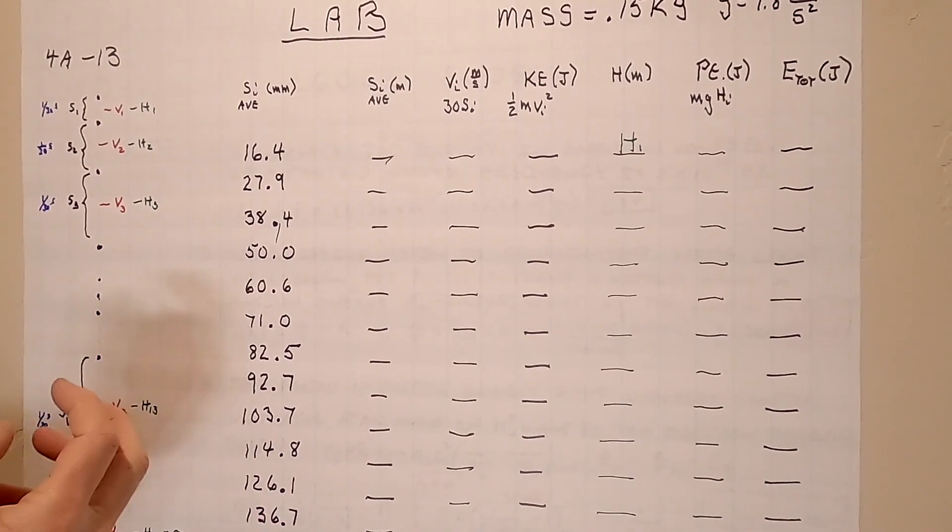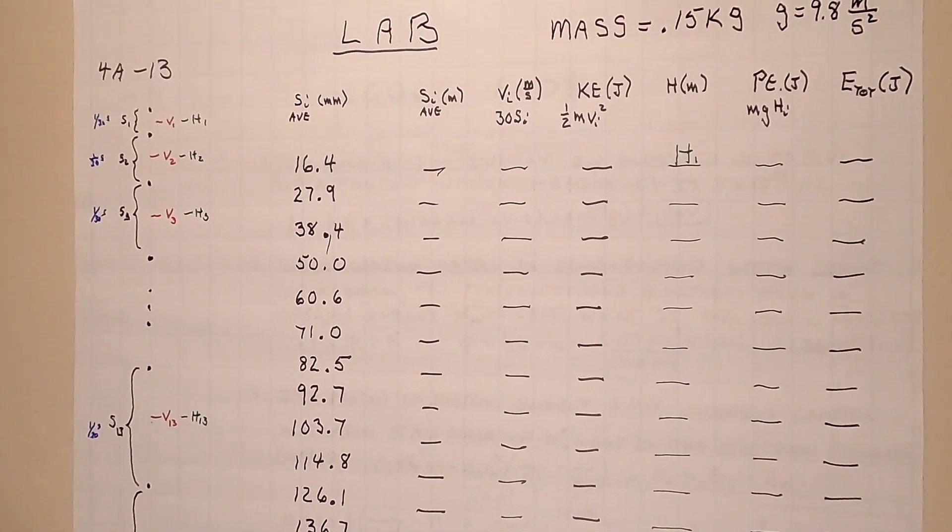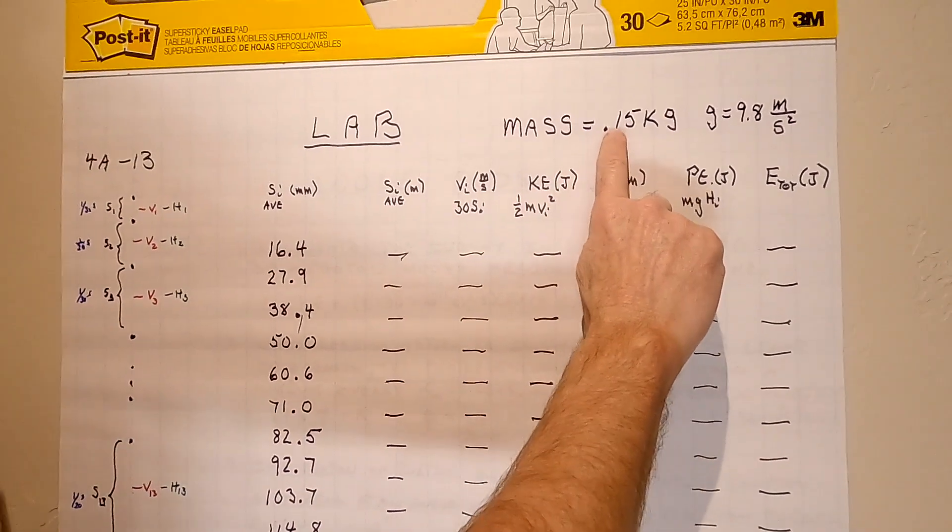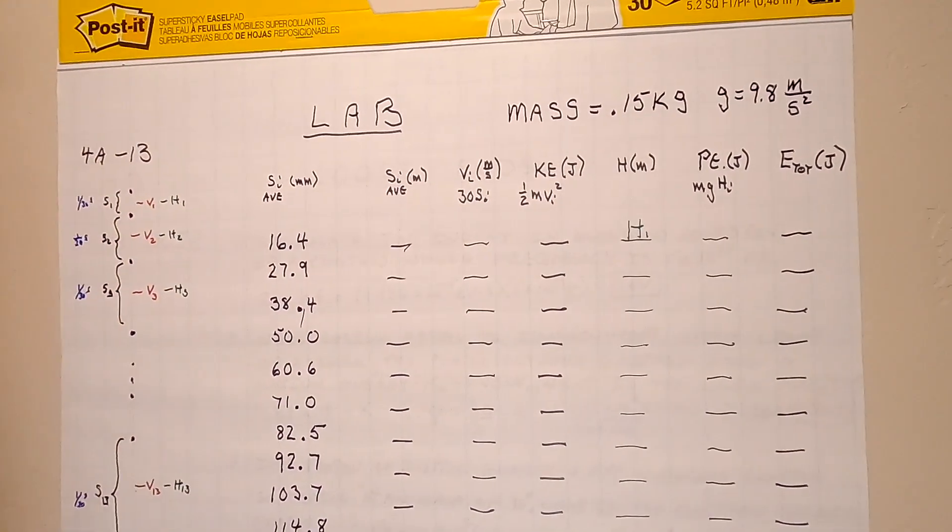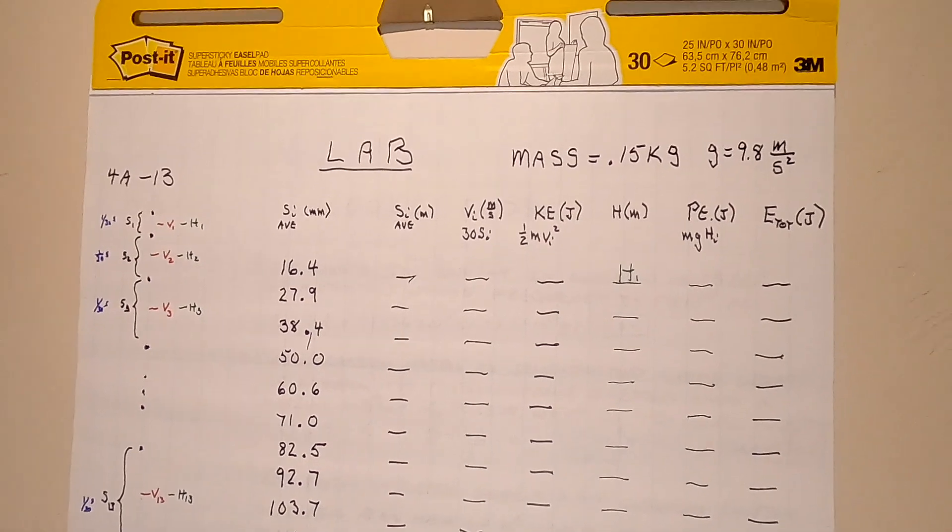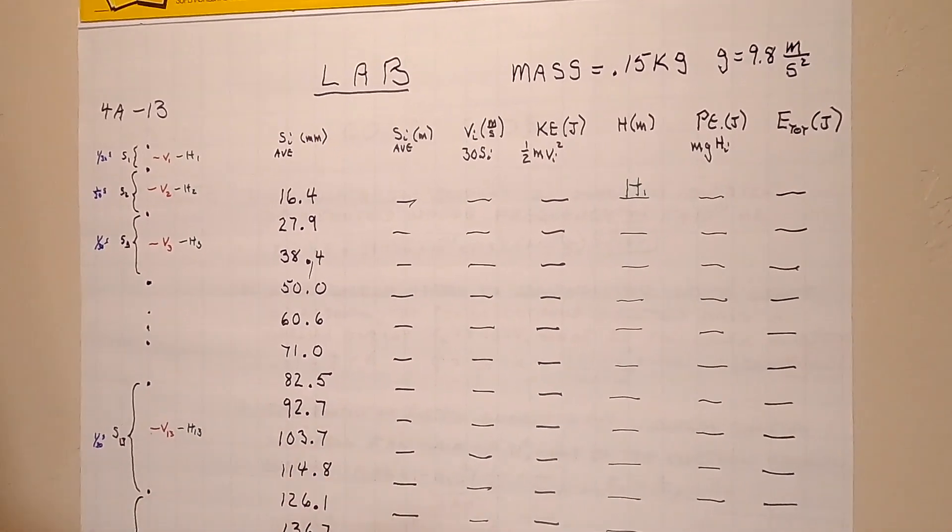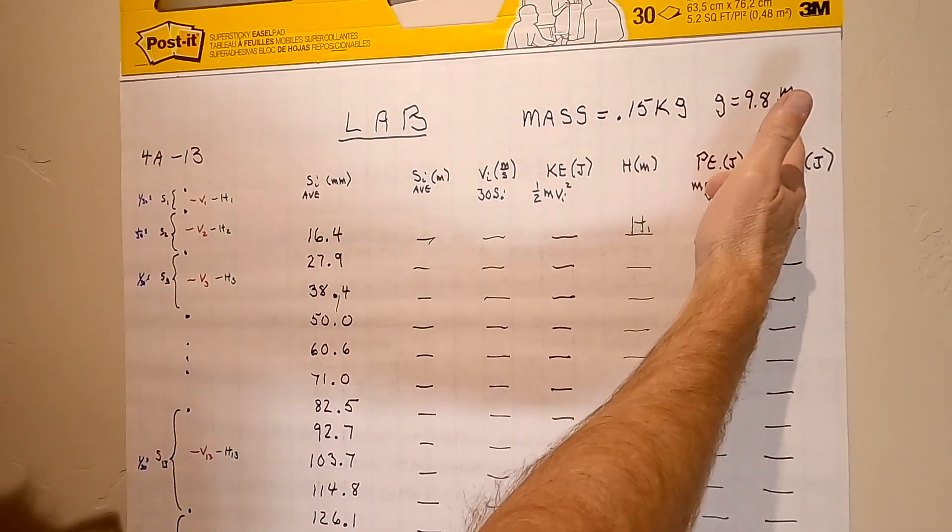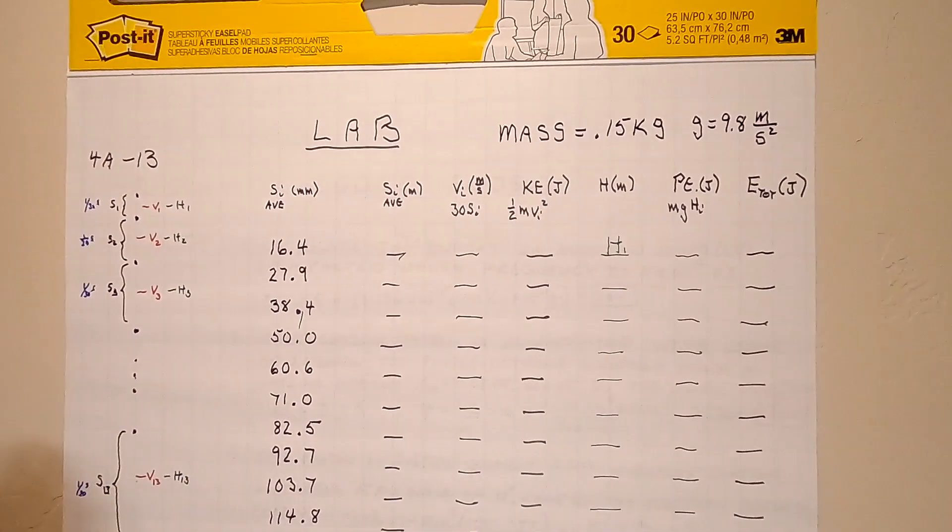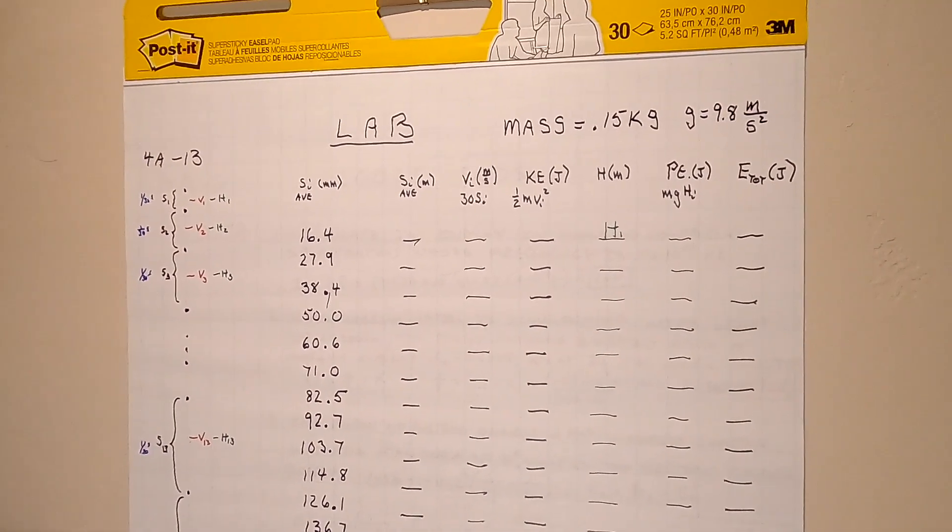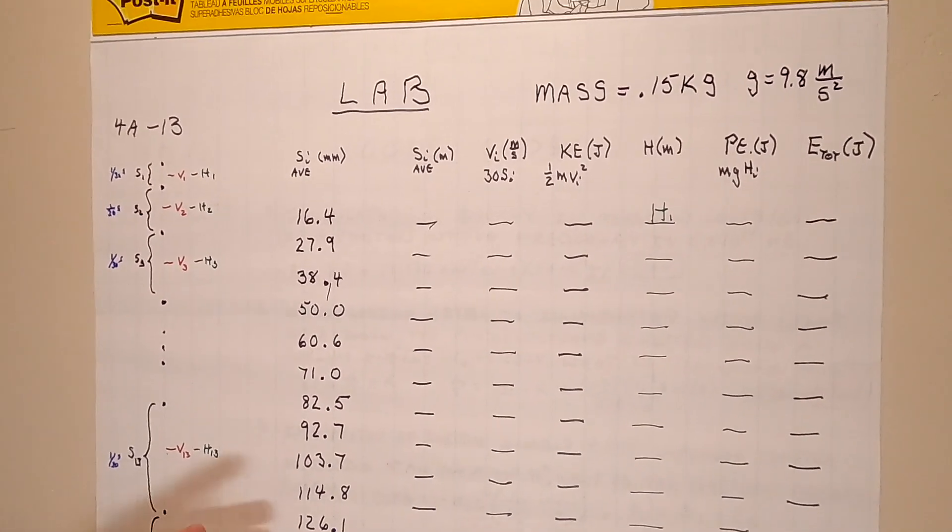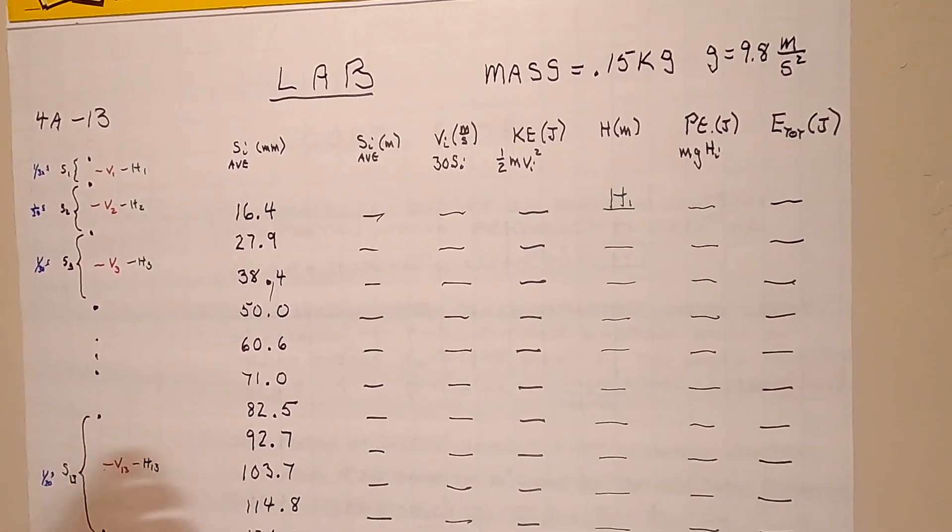Now the mass of the object we dropped, I knew what it was. The mass was 0.15 kilograms. That was the mass of the object. And g, you probably don't remember, but we'll just use the 9.8 right there. Now that's in meters per second squared.